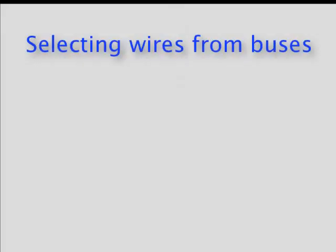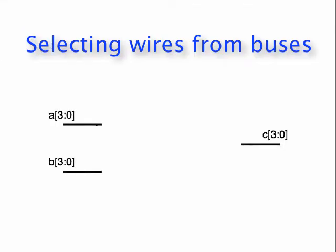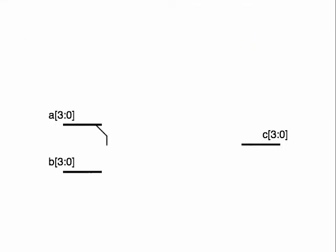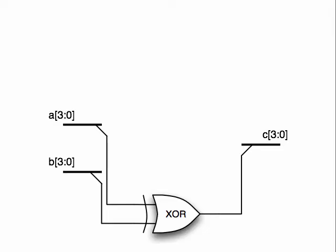So after we've declared our buses, we're likely going to want to connect individual wires of these buses in our circuits. To indicate this in a circuit diagram, we draw a thin diagonal line coming from the bus and label the resulting wire. In this case, I'm showing the least significant bit of the output is the XOR of the least significant bits of the inputs.